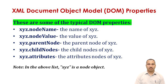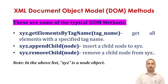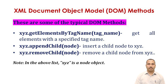There are also typical DOM methods. Three key methods are: 'getElementsByTagName()' — used to retrieve elements by tag name; 'appendChild()' — used to add a child node; and 'removeChild()' — used to remove a child node. With these methods, you can edit and remove elements within an XML document. Note that 'xyz' in these examples denotes a node object.